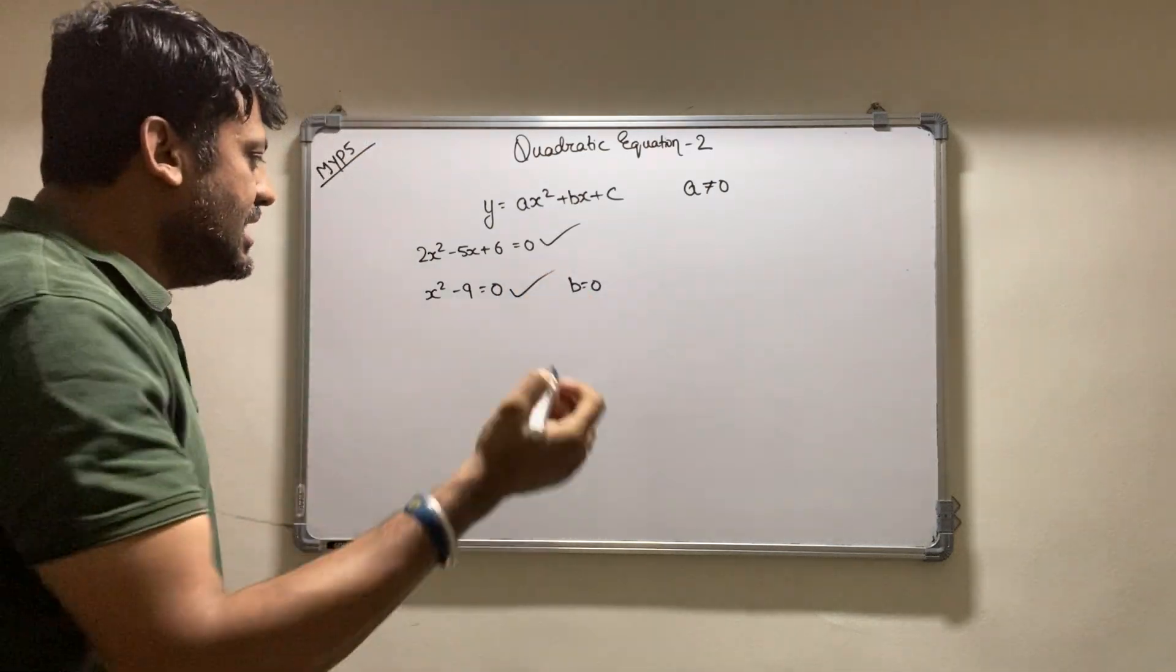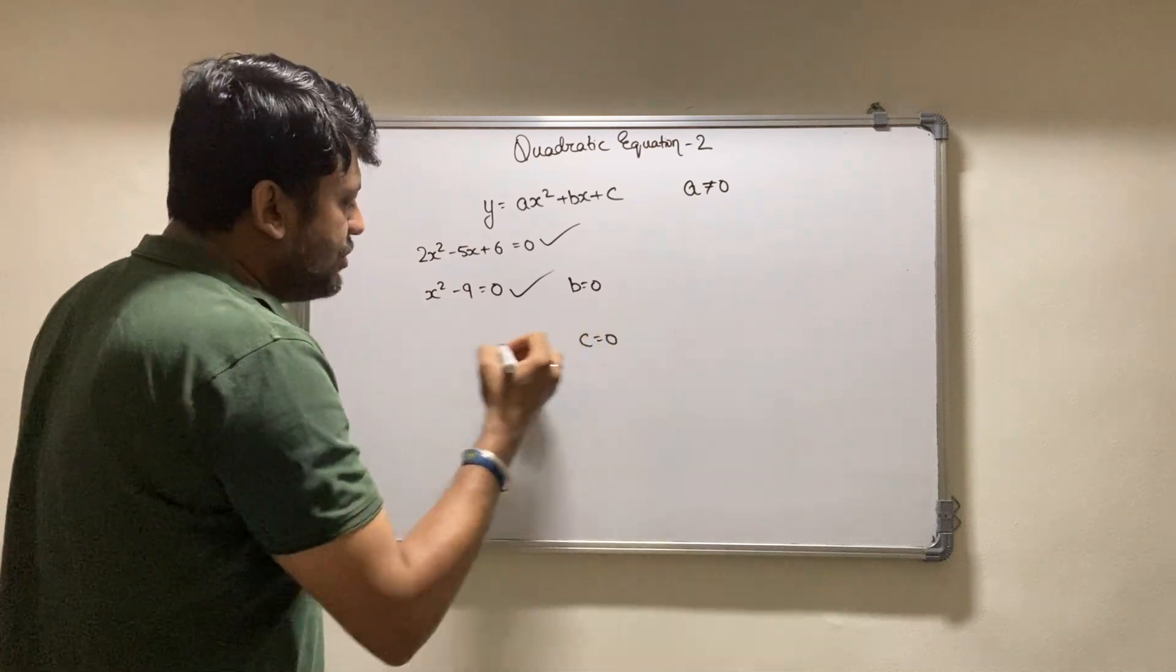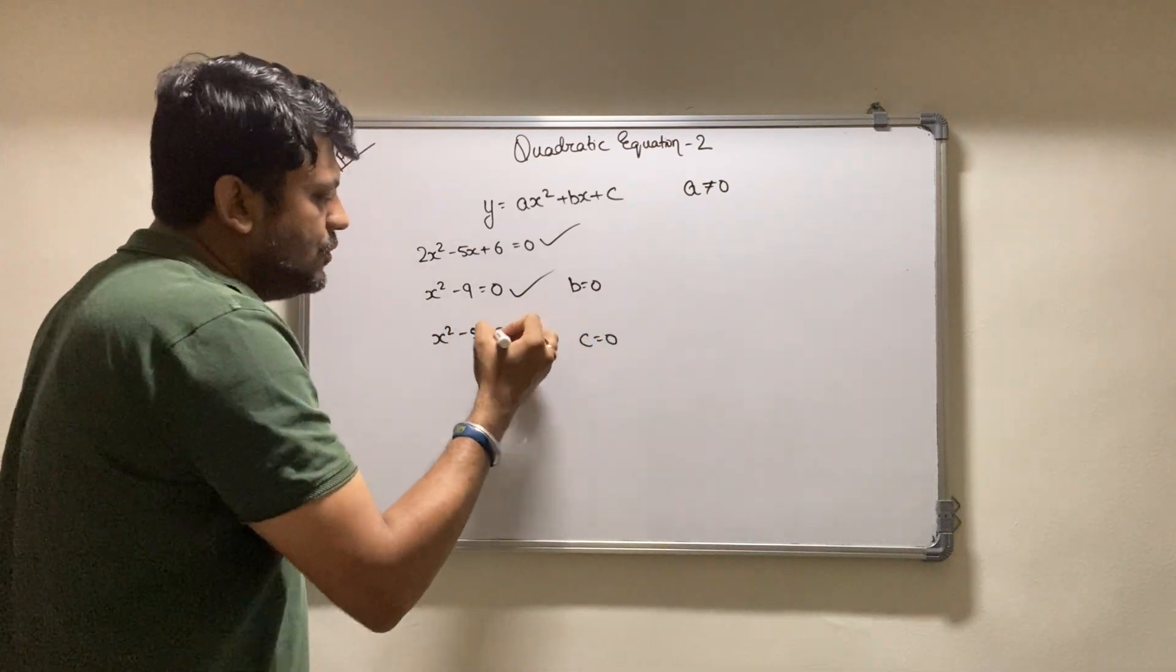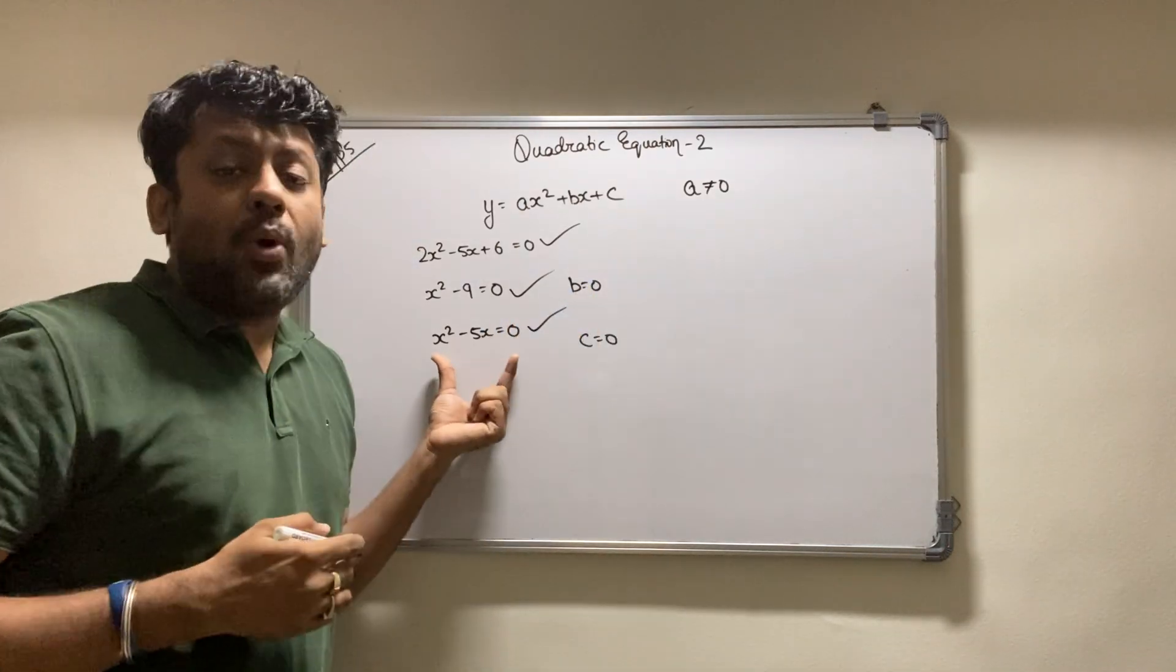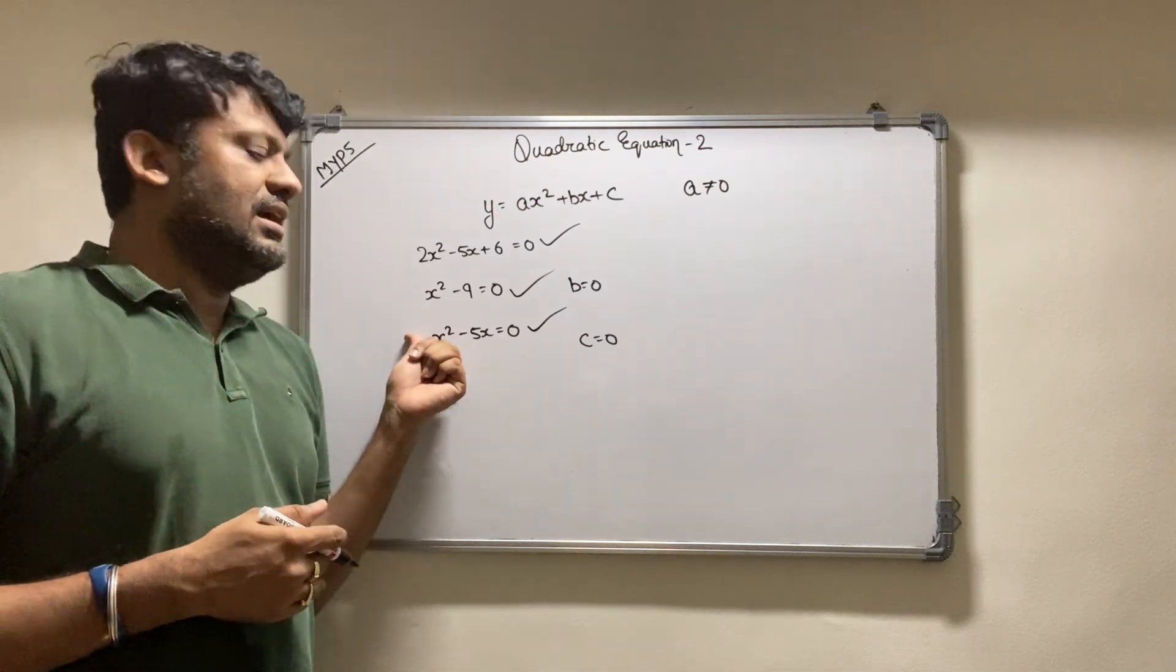Look at the third term where I'm saying that c equals 0. So I can write this as x squared minus 5x equals 0. Is this a quadratic equation? Yes, this is a quadratic equation. Why? Because the value of a is 1 here, and the power of x is 2, that's the most important thing for any quadratic equation.